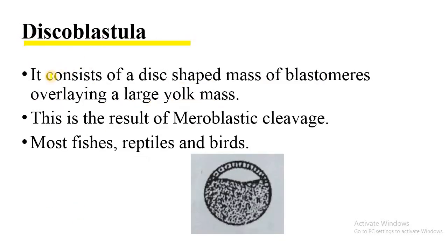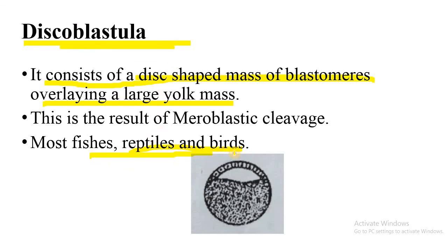Next is discoblastula, which consists of a disc-shaped mass of blastomeres overlaying a large yolky mass. It occurs in the case of fishes, reptiles, and birds. Discoblastula is the result of meroblastic discoidal cleavage in the case of telolecithal eggs.